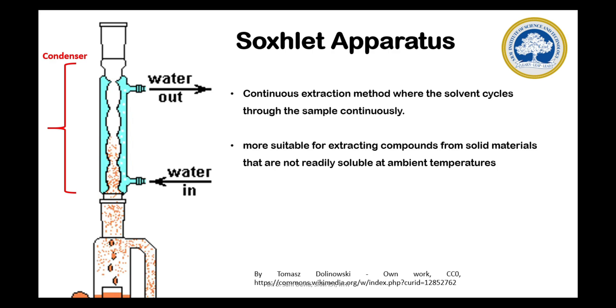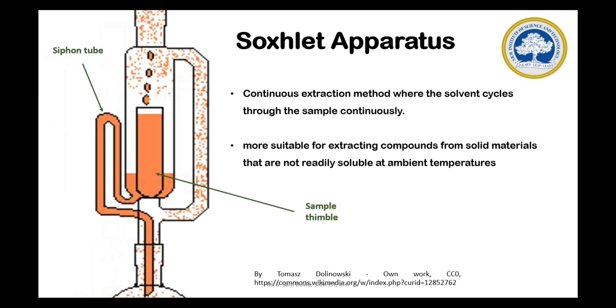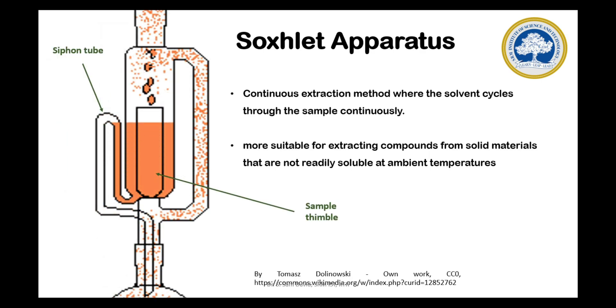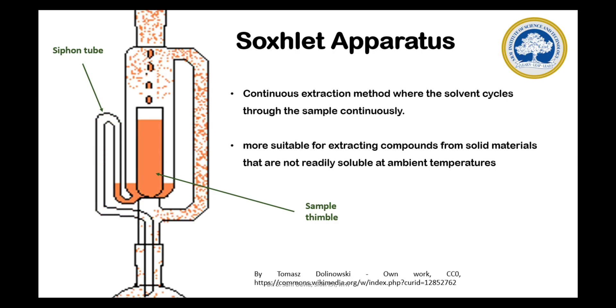Once these vapors reach the condenser, the vapors will condense and fall back to the sample chamber. The falling condensate liquid will wet the solid sample kept in the thimble.